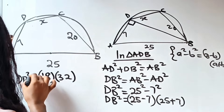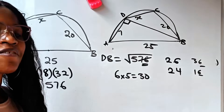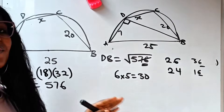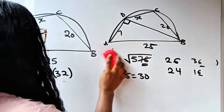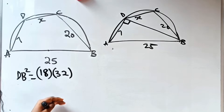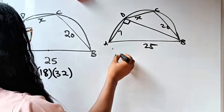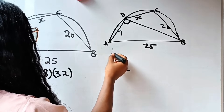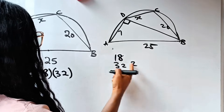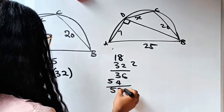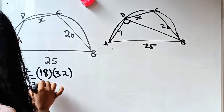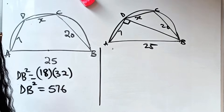Note: my mic tripped off at this point, so we continue from here. Computing 18 × 32: 2 × 18 = 36, and 3 × 8 = 24, 3 × 1 = 3 plus carry 2 = 5, giving 576. So DB² = 576.